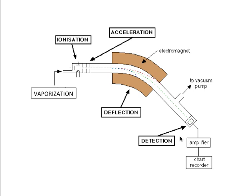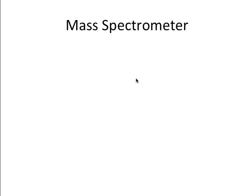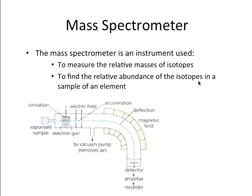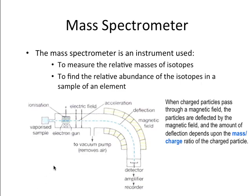When you draw a schematic of a mass spectrometer, this is pretty much what you should be drawing here. The five steps, vaporization, ionization, acceleration, deflection, and detection, should be labeled. Again, it's used to measure the relative masses of isotopes and the relative abundance of the isotopes in a sample of an element. We have the vaporized sample becoming ions going through that magnetic field. The amount of deflection depends on the mass charge ratio of the charged particle.